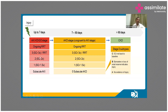AKI is staged as stage 1, stage 2, stage 3, and ongoing RRT which is equal to stage 3. AKD is again divided into stages 1, 2, 3 — only the time frame changes. If the serum creatinine is not back to baseline after 90 days, you end up labelling the patient CKD.